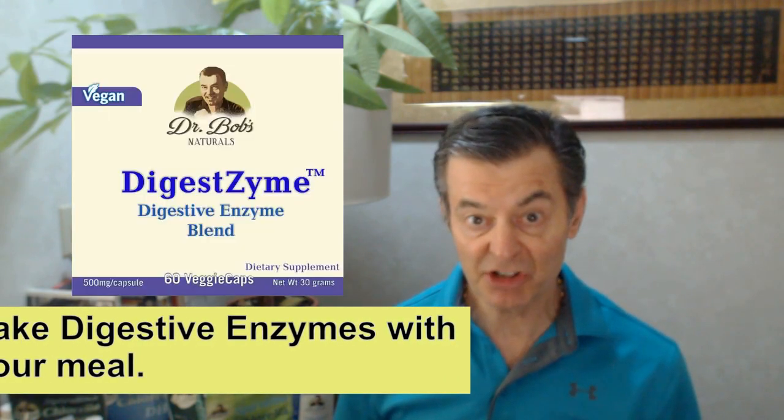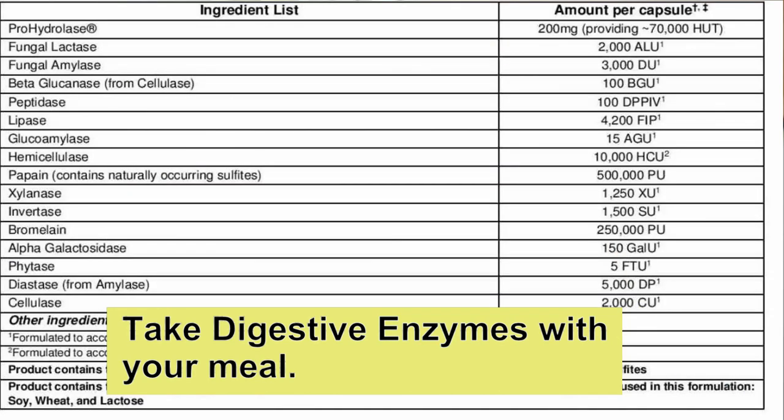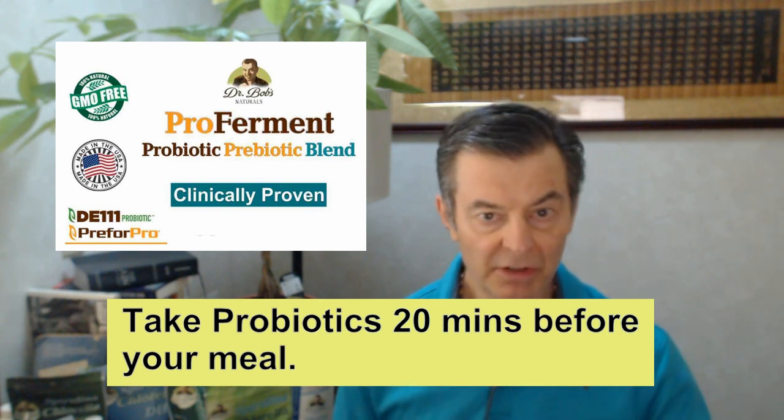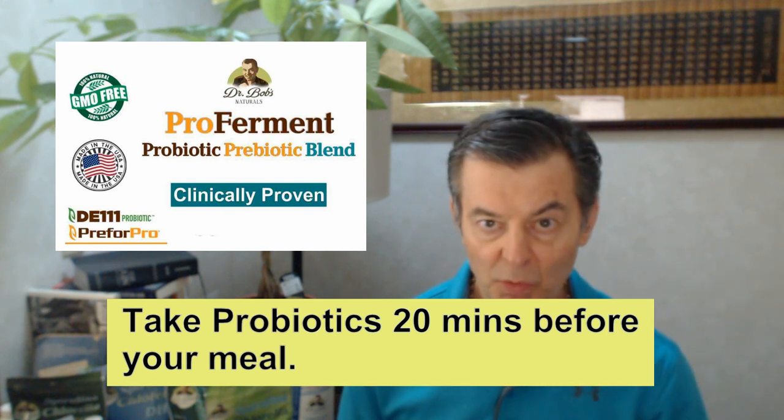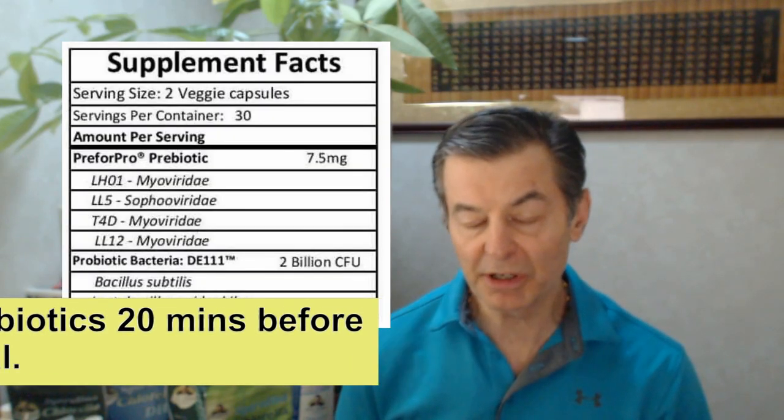To keep things simple, I just recommend a full spectrum digestive enzyme blend, which is my Digestzyme. It's got all these different enzymes in it your body requires. I take that right before a meal, and I take my probiotic about 20 minutes before my meal. You can take some of the probiotics with the bacteria and some with the spores, it doesn't really matter, but you want to take that about 20 minutes before you eat, and the digestive enzymes just a few minutes before or with your meal. And that'll give you really excellent digestion.